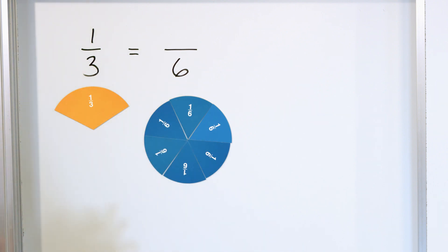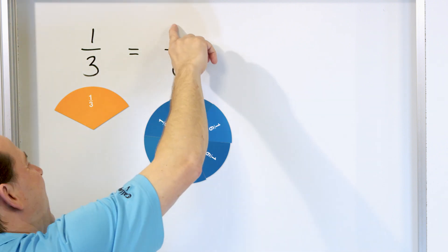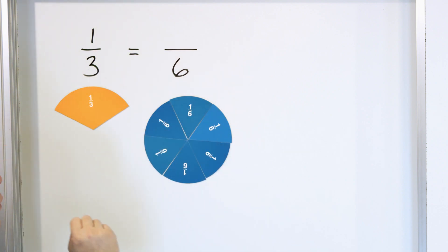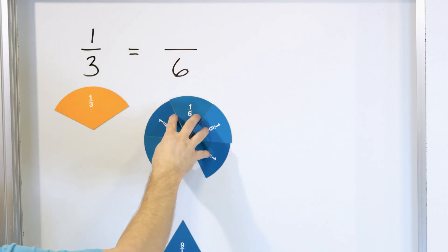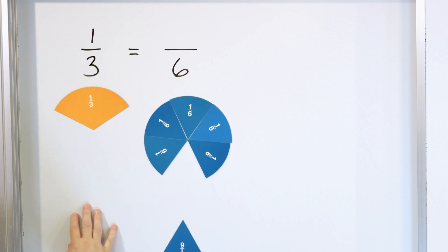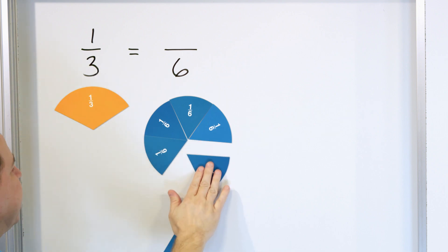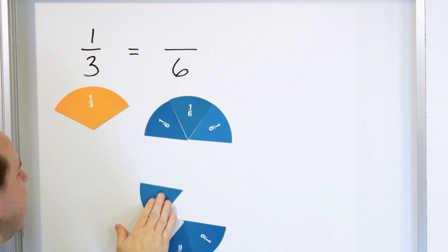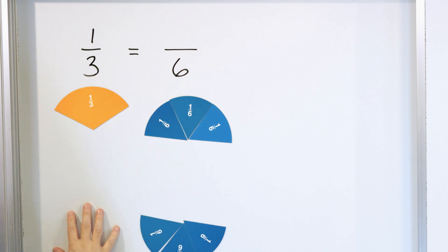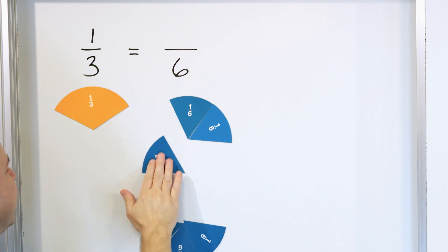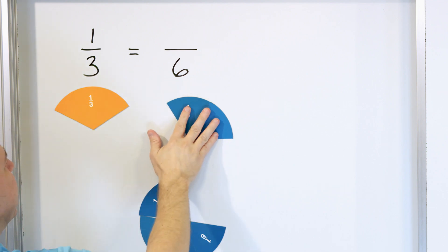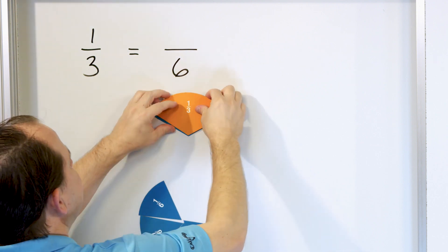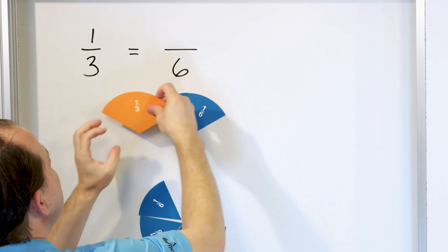So the question is, what is the correct amount of 6ths that is exactly equal to 1/3? Well, if I take one slice away, is this equal? Not quite. If I take another one away, is this equal? Not quite. If I take this one away, not quite. If I take this one — are these two equal? I think you can agree with me that these two are exactly equal.